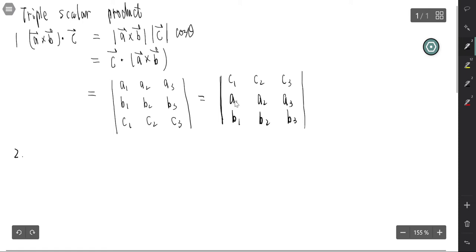And the geometrical meaning of the triple scalar product is, if this is A, this is B, and if this is C, actually it is the volume of this parallelepiped.